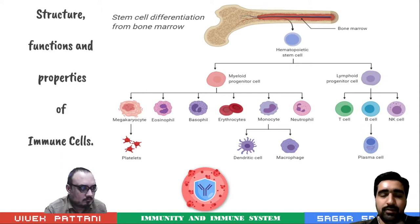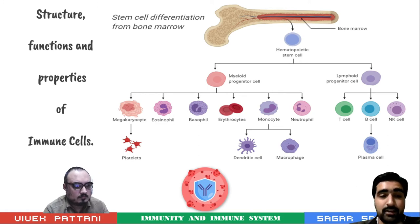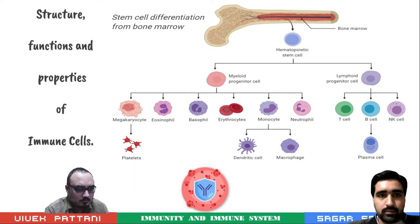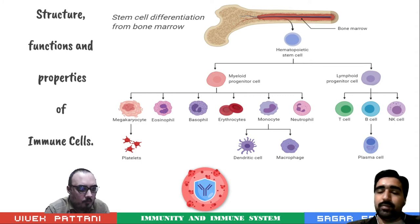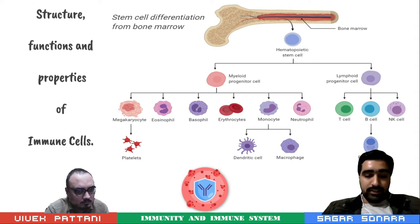There is also a subclassification which undergoes as megakaryocytes, eosinophils, basophils, erythrocytes, monocytes and neutrophils — all having different properties and functionality for the immune system. When talking about the lymphoid progenitor cells, there is a T cell, B cell and natural killer cell. B cell also produces plasma cells. There are also platelets, dendritic cells and macrophages which have different characteristics.